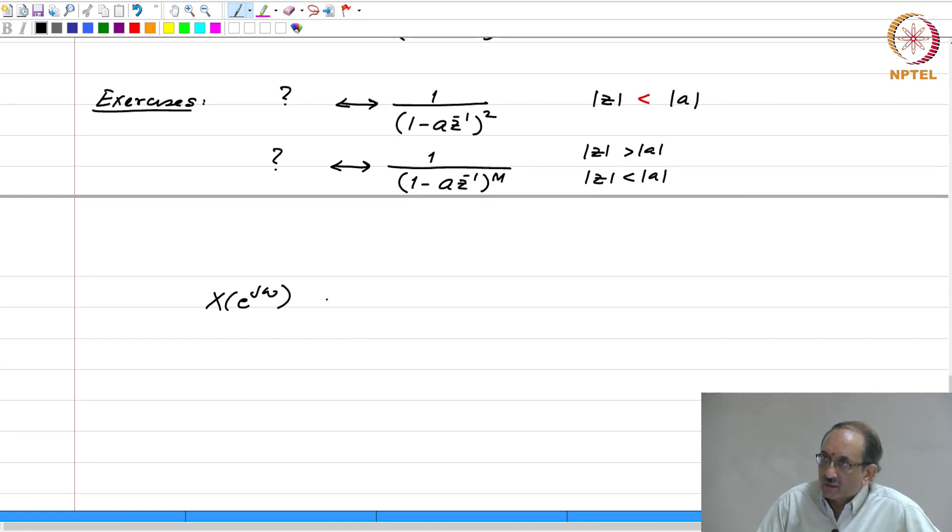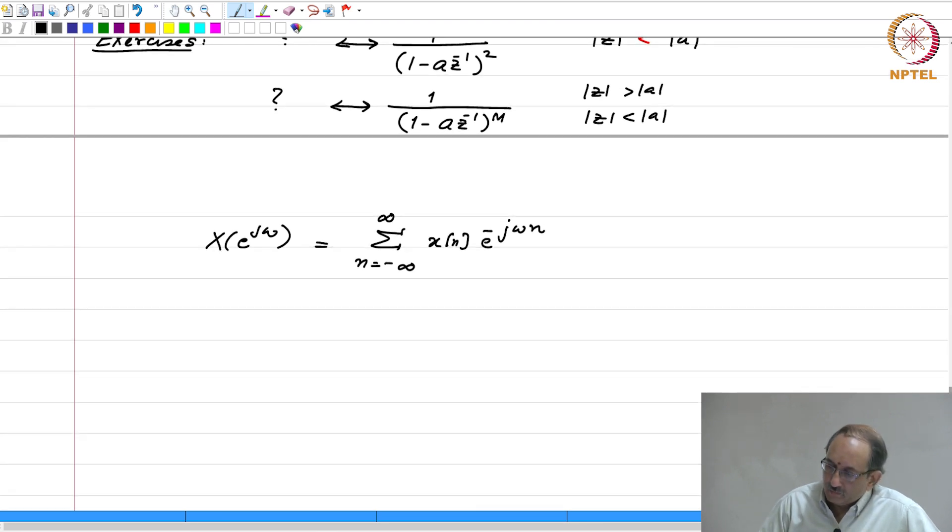Let us look at the corresponding property for the DTFT. And now, what we do is, we differentiate with respect to omega, because the independent variable is omega. Therefore, this is d by d omega of x of e to the j omega.